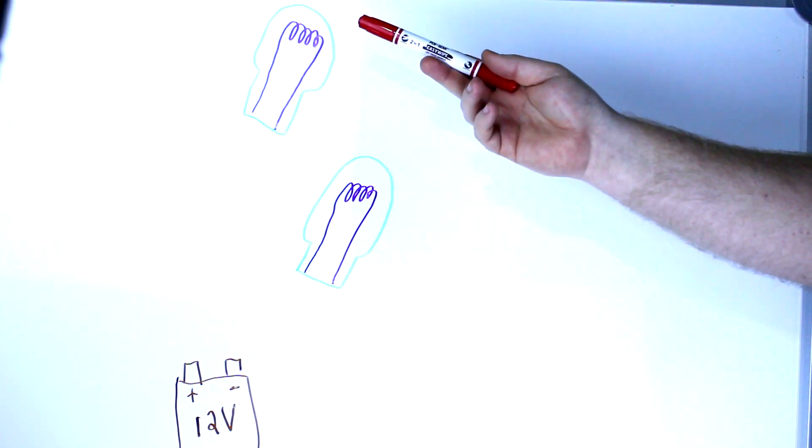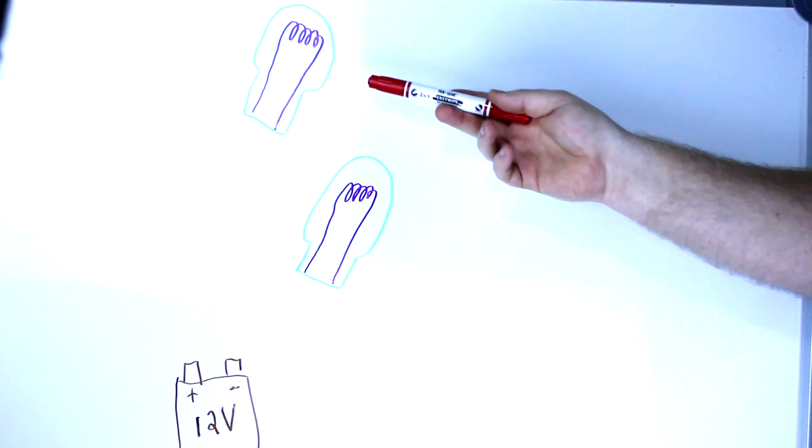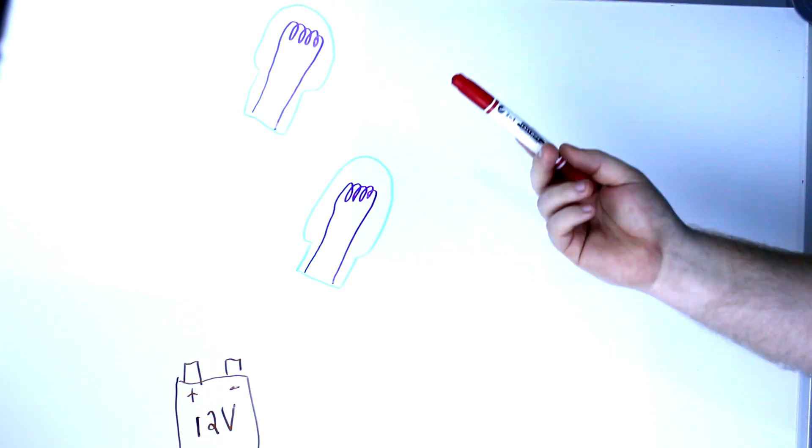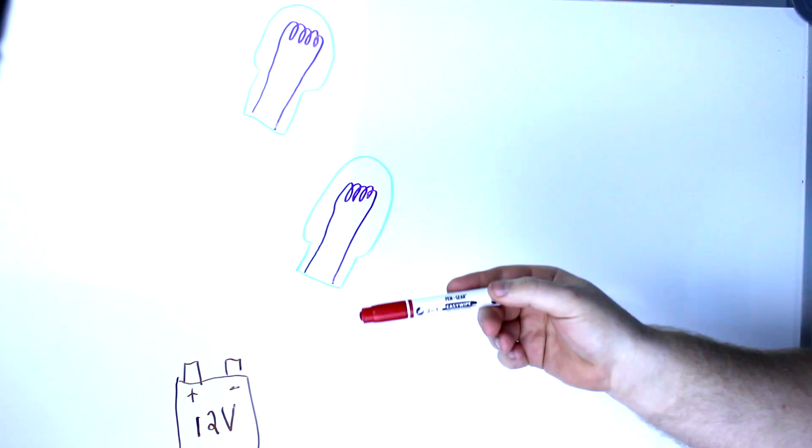So we have a 12-volt battery here and we need to light up these two light bulbs. We'll assume that these light bulbs are rated for 12 volts, so with that being the case, how do we do it?